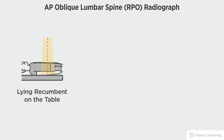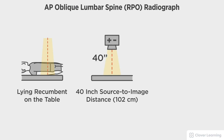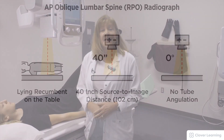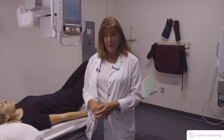In this view we will be demonstrating the AP lumbar spine right posterior oblique. The RPO view should be performed with the patient lying on the table with a 40 inch source to image distance and no tube angulation. The patient will roll towards me 45 degrees.